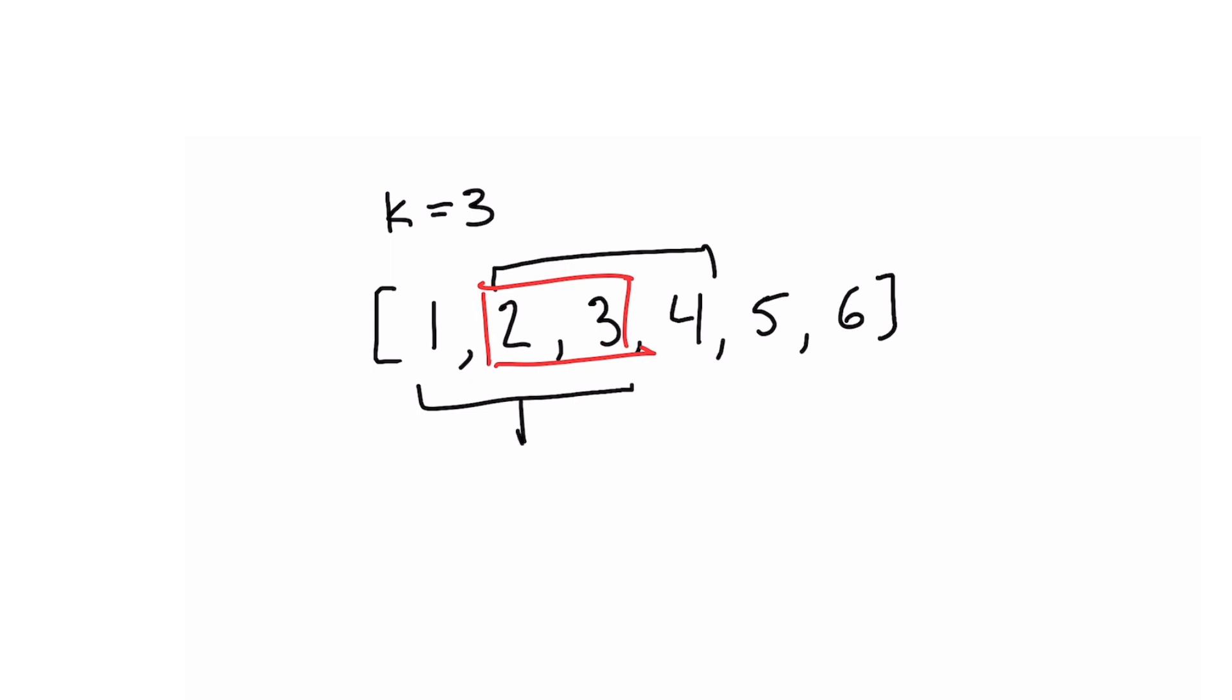To get to the sum of 6 for this first subarray and 9 for the second subarray, we don't actually need to recompute everything. All we need to do is look at the difference between these two subarrays. In this case, the only thing that actually changes is the first and last values. If we compare the sum of the first subarray to the sum of the second subarray, the only difference between these is that first and last value.